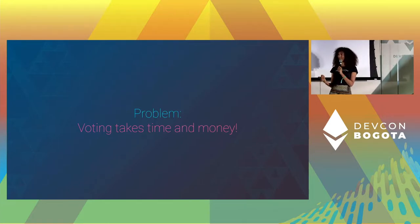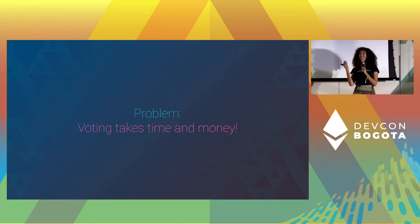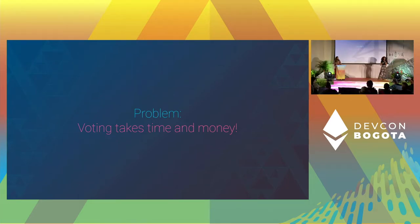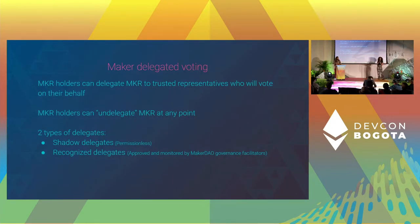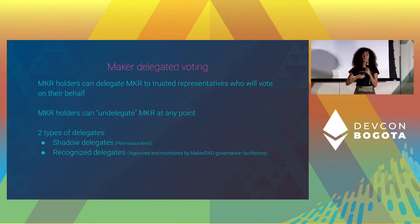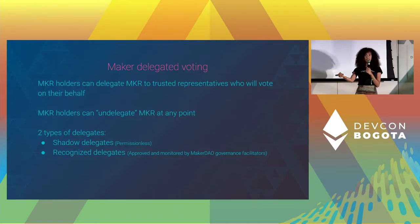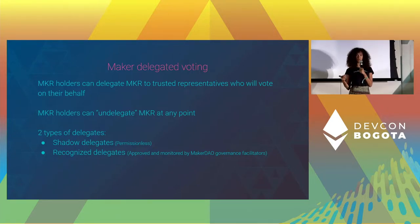You can vote as a Maker token holder, but the problem is that voting takes time and money — hence the introduction of delegation, basically allowing Maker token holders to entrust a third party with their voting power. It's kind of like a politician in the end: you trust them with your vote, and then they can take decisions for you. They're going to be involved in reading on the potential decisions and changes that are going to be implemented.